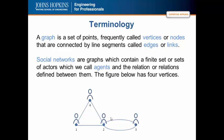We'll now go over some terminology that will help us understand the Good Will Hunting problem. A graph is a set of points, frequently called vertices or nodes, that are connected by line segments called edges or links. Now, there are five terms in that sentence. A graph is not a picture, a bar chart, a line chart. A graph is a mathematical term that consists of a set of nodes and a set of relationships between them.